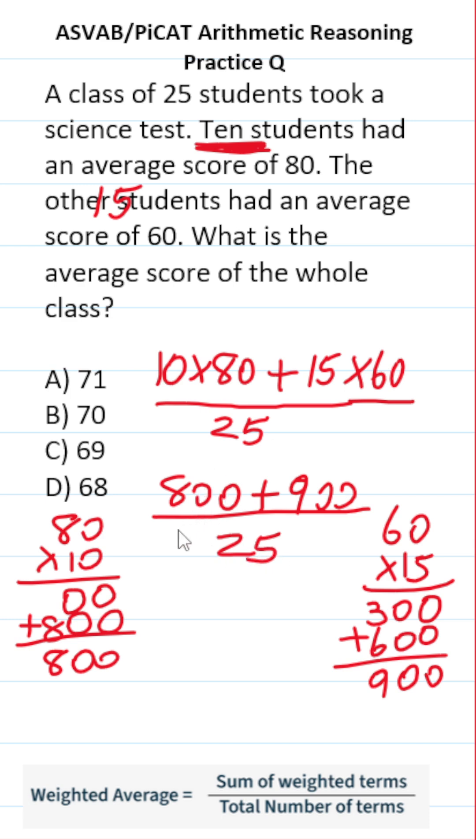So we have 800 plus 900 divided by 25. 8 plus 9 is going to be 17, so 800 plus 900 is going to be 1,700 divided by 25. Now we've got to reduce this. You could do the long division if you want, or you could reduce it by a common factor of 25. It's up to you.